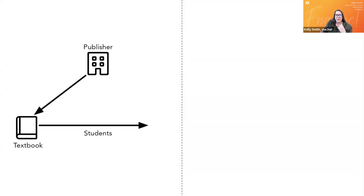The model on the left represents how we assume all publishing happens: a publisher invests in publishing a textbook, students buy the books, the publisher makes its money back and makes a profit, and the publisher pays royalties to the author — typically a single digit percentage. So the publisher is getting most of the proceeds.